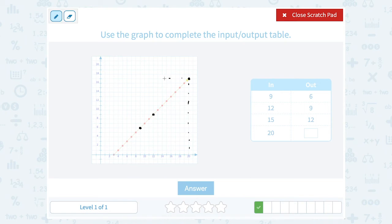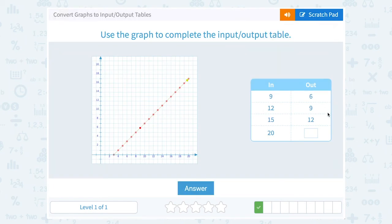And then I want to read directly across to see what my output or my y value is. Now notice it lands halfway in between 16 and 18, so that must be 17. Halfway between, this would be 16, 17, 18. So the output at that point would be 17.